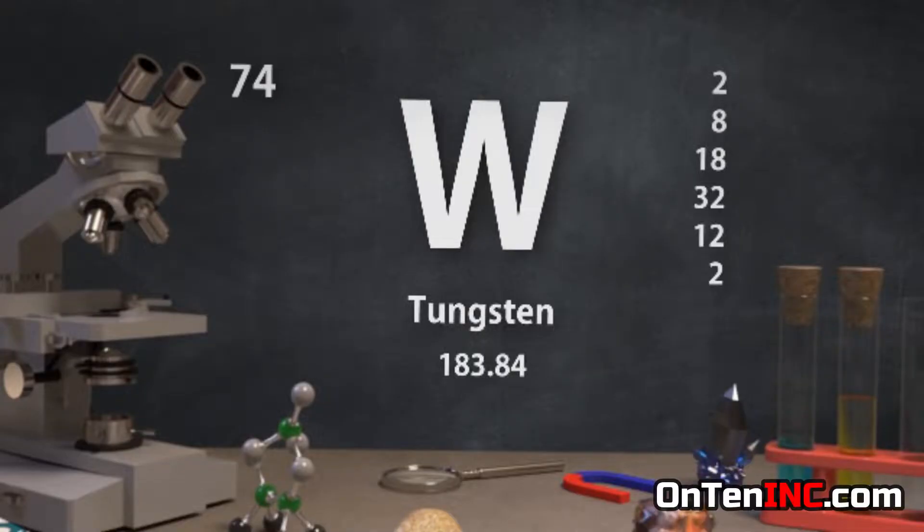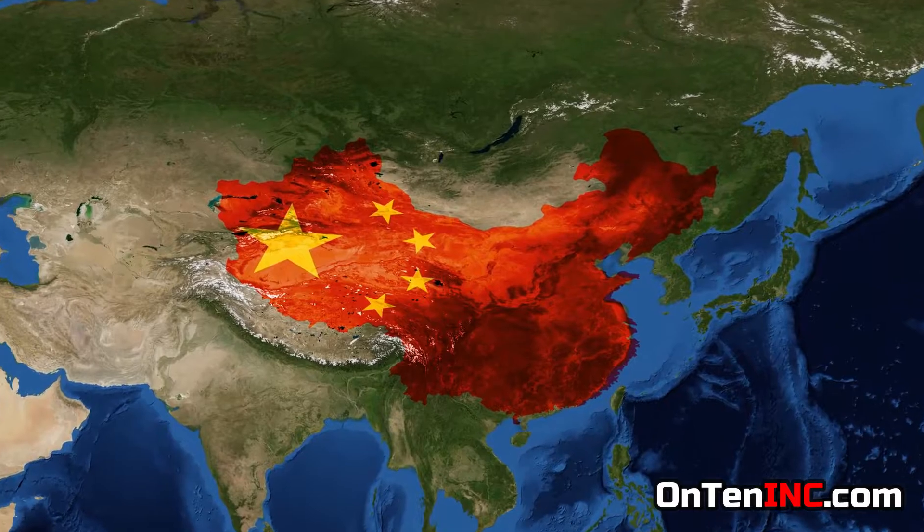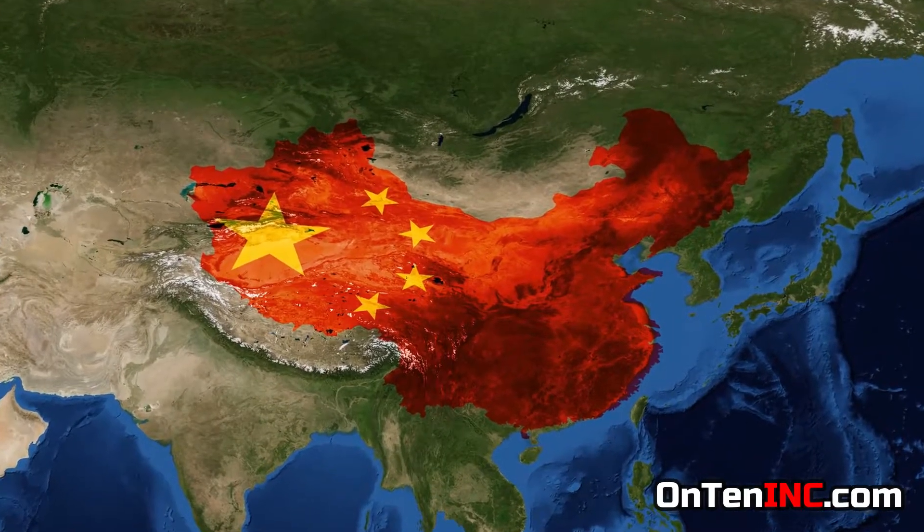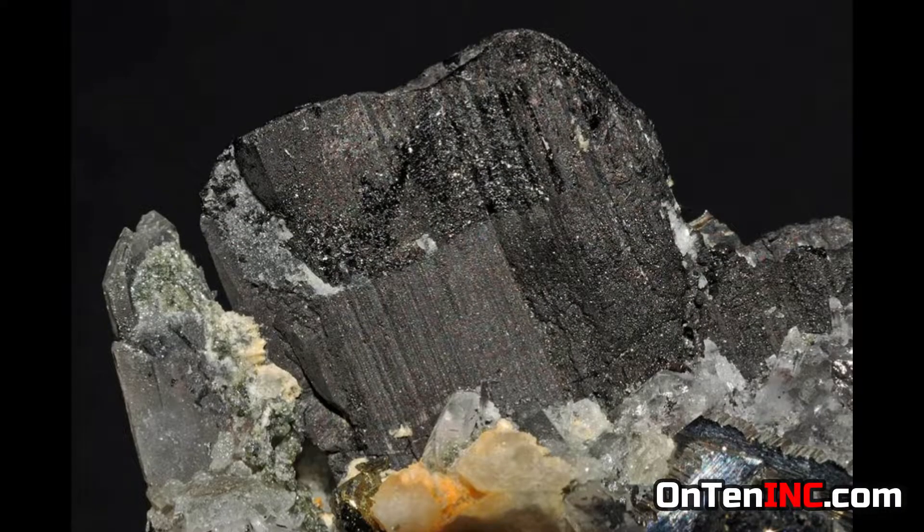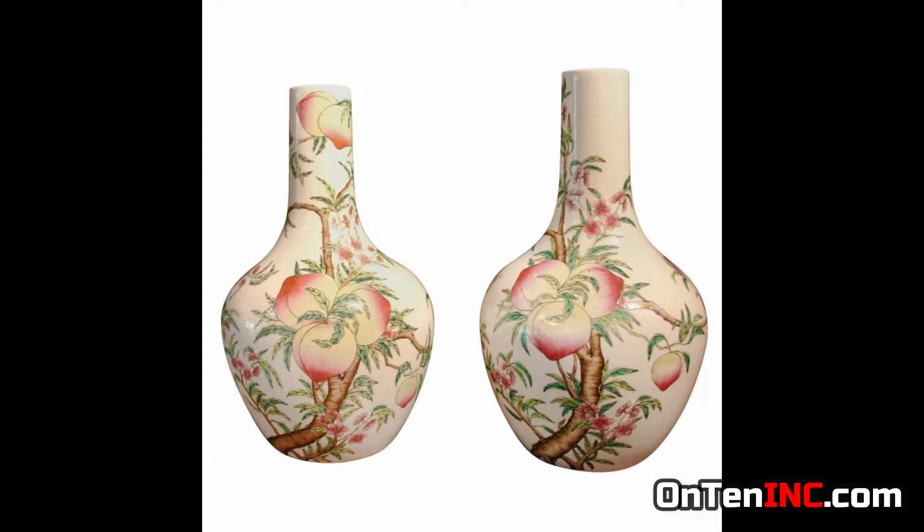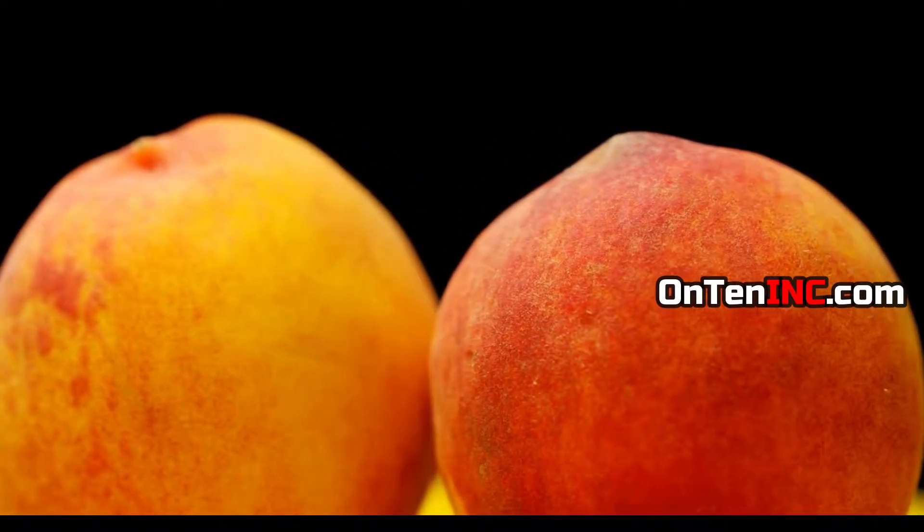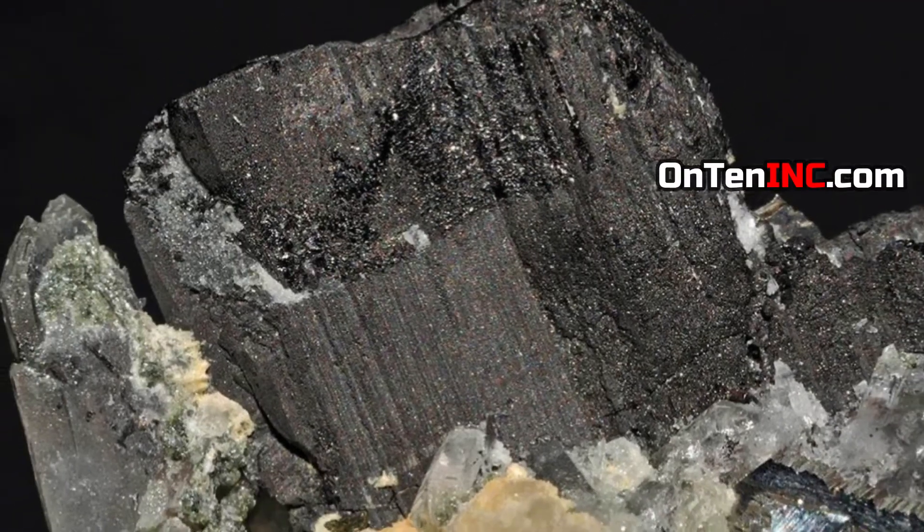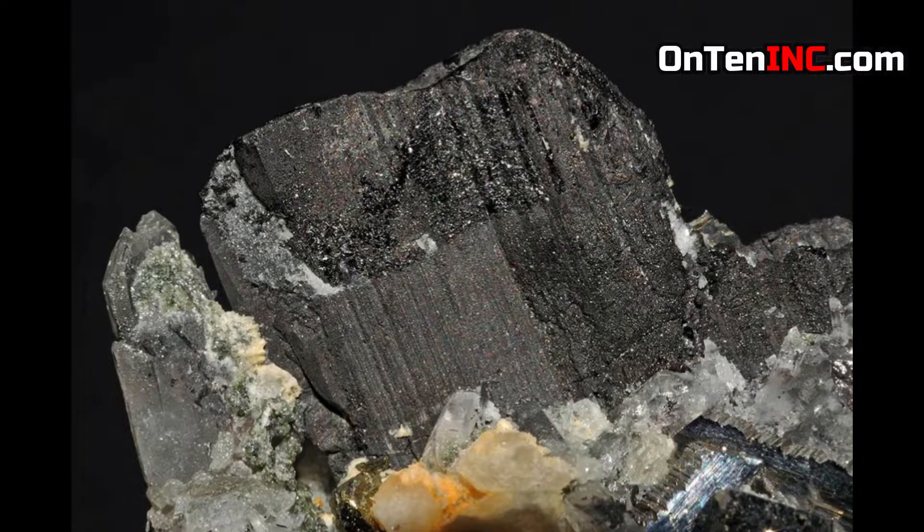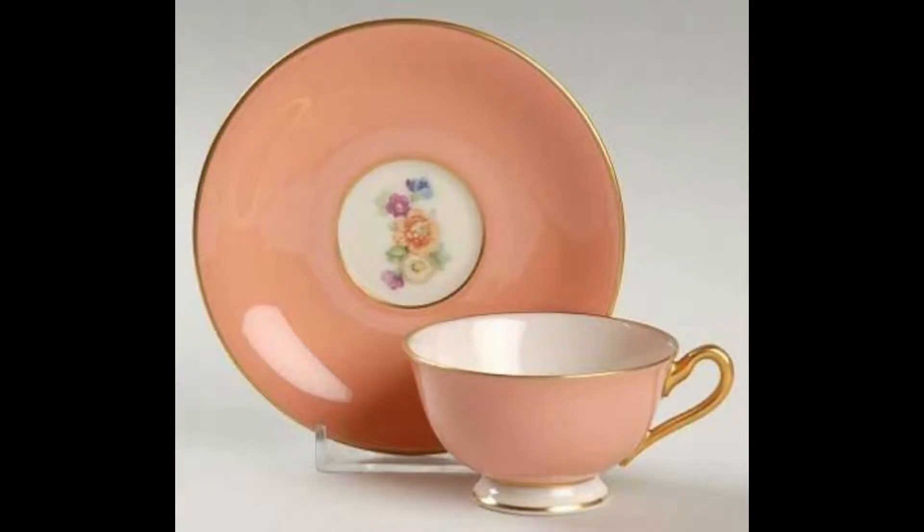To know the history of tungsten, we first have to go to China. For the first time around 350 years ago, the Chinese used tungsten. They would use it on vases and plates to get that peach color, which is like pink. And I guess they named it peach because it's kind of similar to the fruit itself. But the Chinese didn't know what type of metal they had, they only used it for that color.